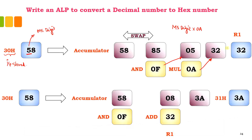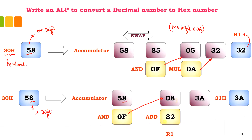The result will be in the accumulator, but I need to store it in the temporary register R1 — that part of the calculation is over. Next I need to have only the LS digit, so I am taking the complete number again from location 30H, moving it to the accumulator, and performing masking. On masking, I obtain only the LS digit which is 08. Now I am going to add whatever was in the temporary register R1 — that is the product of MS digit × 0A which was 32 — and 32 added to 08 in hex equals 3A.